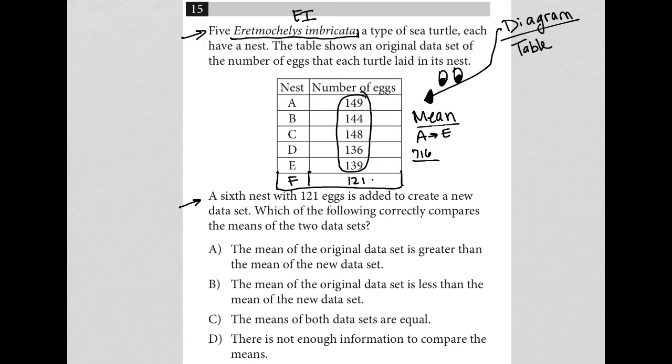Add up all the data points. And then we divide by the number of data points we have, right? So 716 divided by 5 gives me 143.2.